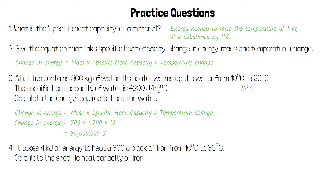For the next question we'll need to rearrange after we've substituted our values. We use the same equation as before. We need energy change to be in joules, not kilojoules — so 4 kilojoules is 4,000 joules. And we need mass to be in kilograms, not grams — so 300 grams is 0.3 kilograms.